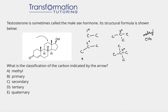Testosterone is sometimes called the male sex hormone. Its structural formula is shown below. What is the classification of the carbon indicated by the arrow?